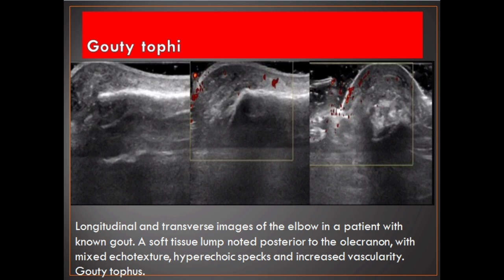Longitudinal and transverse images of the elbow in a patient with known gout. A soft tissue lump noted posterior to the olecranon, with mixed echotexture, hyperechoic specs and increased vascularity — consistent with gouty tophus.